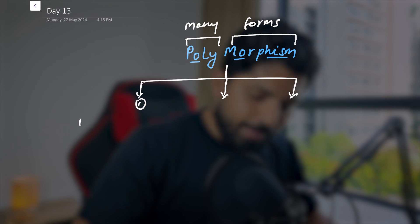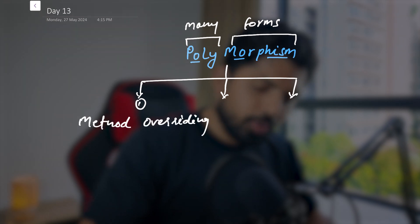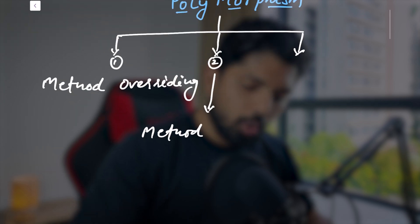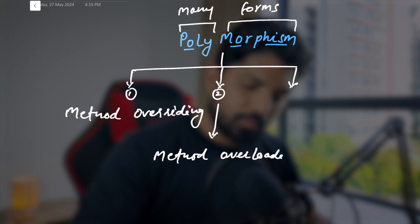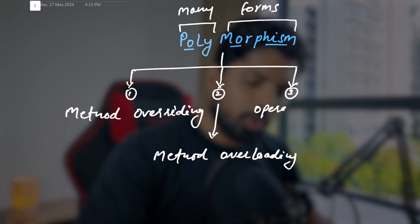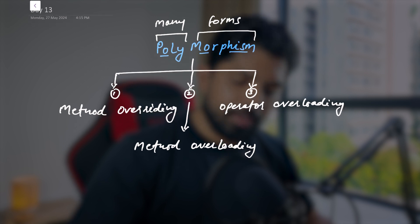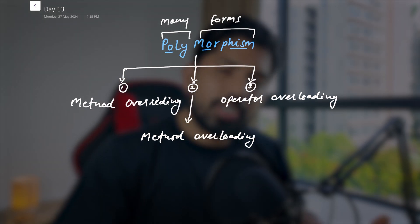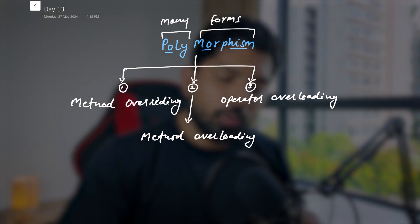The first principle is method overriding, which we've already covered. The second is method overloading, and the last is operator overloading. So we have three principles: method overriding, method overloading, and operator overloading. Let's discuss the first principle — method overriding.